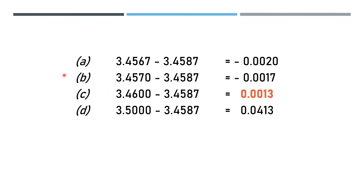With respect to option A, that is 3.4567, the difference is minus 0.0020. With respect to option B, that is 3.457, the difference is minus 0.0017.